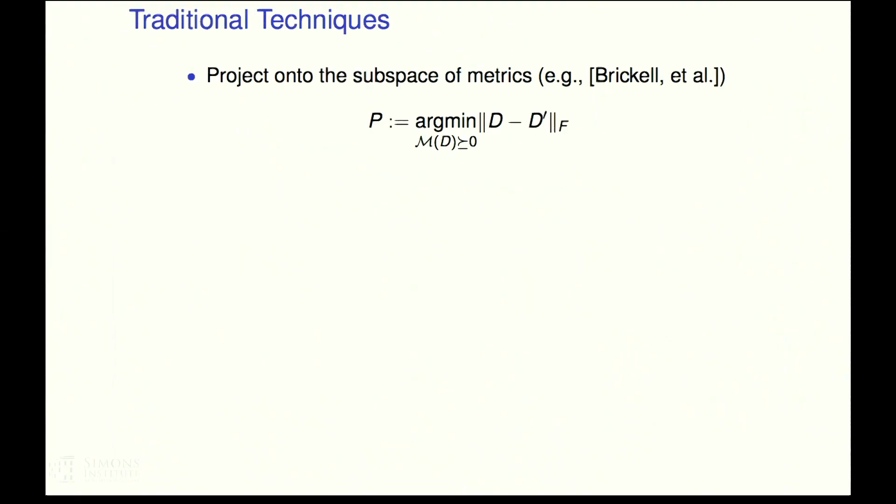So I'm going to do this in sort of revisionist history order. So I started thinking about this from an old paper of Brickell, Dillon, and Tropp about 2007, 2004. And they say, no, no, no, let's find a perturbation that basically we want to take our corrupted matrix and project onto the subspace of metrics. I.e. find the new metric that is as close as possible in the Frobenius norm to the original. So in that sense, small.